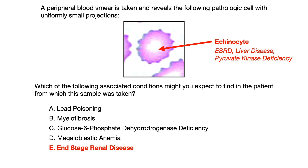Now if you were taking this question and you weren't sure what that cell was — that it was an echinocyte — or you knew it was an echinocyte but weren't sure what echinocytes were associated with, how could you have worked through this question to eliminate incorrect answer choices? All of the answer choices A through E are associated with different types of pathologic red blood cells, so if you know some of them you could have eliminated incorrect choices.